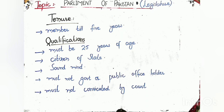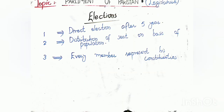Now let's talk about qualifications — which individual can become a member of the National Assembly. They must be a citizen of Pakistan. He must be at least 25 years of age. He must be of sound mind. He must not be a government or public office holder. He must have no allegations against him, or must not have been sentenced for more than two years.